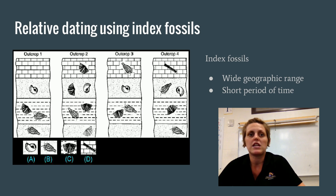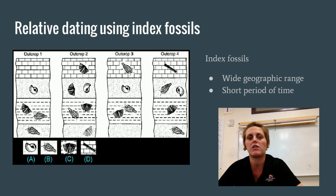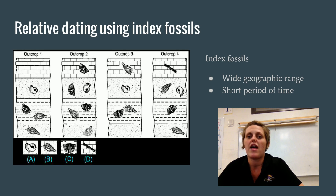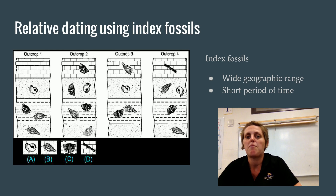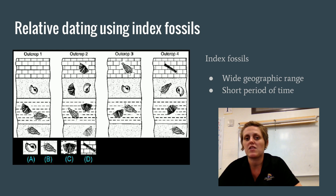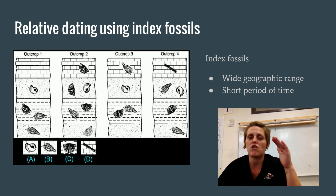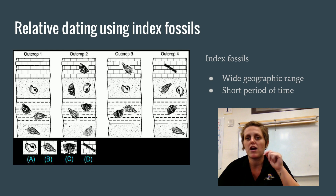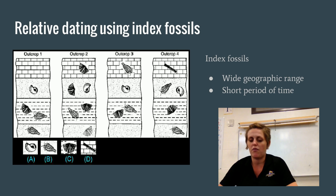You can also use index fossils. Index fossils are fossils which have a wide geographic range over a short period of time. If you analyze these four outcrops, you can see that sample A occurs in one short period of time but is common in every single outcrop — therefore it would be a great index fossil. The others are not: B is in too many periods of time across too many strata. C is also in too many rock layers. D only occurs in one outcrop, so it's not common enough worldwide.